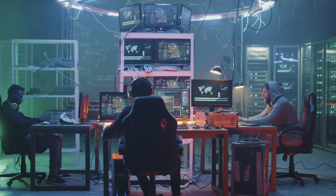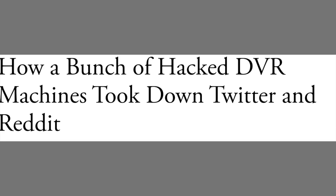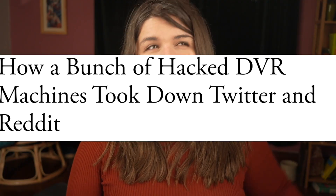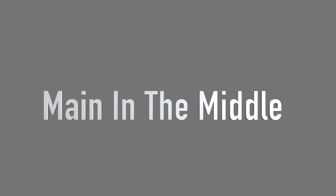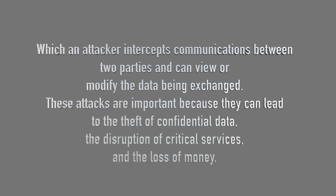Network security also ensures the availability of your network. The most common type of network attacks are denial of service (DoS) and distributed denial of service (DDoS) attacks, which overload your network with traffic or requests, making it inaccessible to legitimate users. An example was the Reddit attack back in 2016, where a DoS attack caused the site to go offline for several hours. Another common attack is the man-in-the-middle attack, where an attacker intercepts communication between two parties and views or modifies the data being exchanged — violating both confidentiality and integrity.